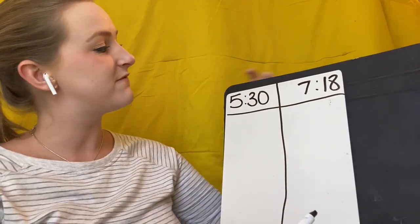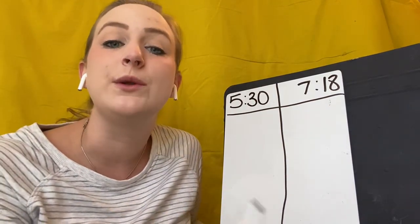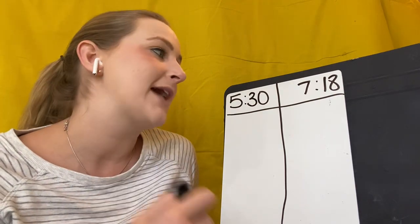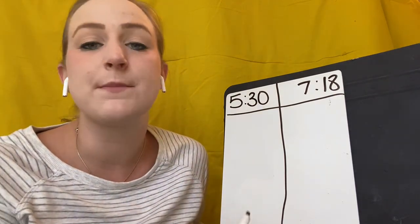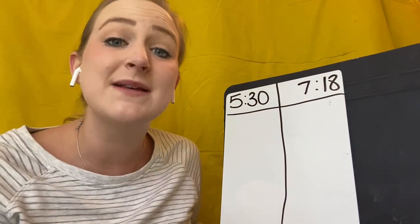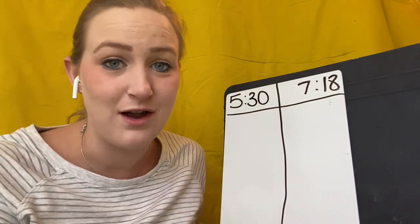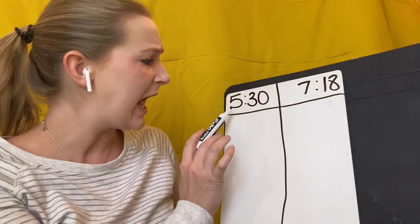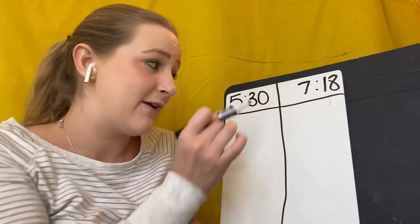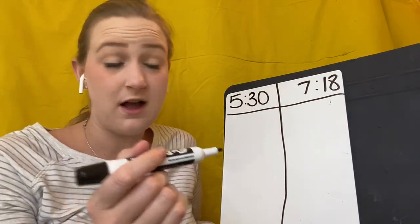So I'm going to try to get from 5:30 to 7:18. Now, if you know me, I like to use easier numbers. I like to add and subtract and multiply and divide using numbers that I already know, because it makes it easier for me in the long run. So I'm going to try to get from 5:30 to 7:18. Now I don't really know that off the top of my head, but I do know how to get from 5:30 to 6 o'clock.